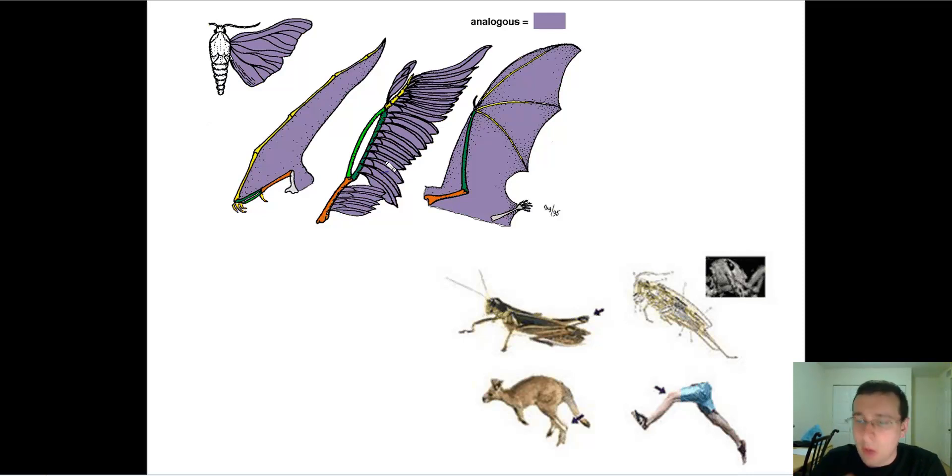Notice how the hind legs of kangaroos or grasshoppers or even humans are all developed with similar structures to create propulsion or jumping ability. Now even though the animal's jumping ability will vary, clearly the grasshopper is way better at it than the kangaroo is or than we are. Either way, similar structures evolve for similar purposes, even though they do not share a common ancestor that has that feature.